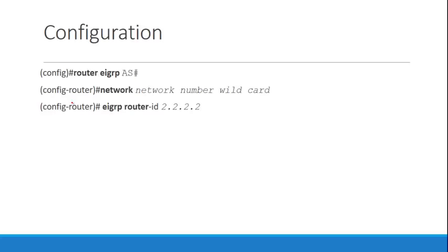We do the network statement to activate the interfaces that will participate in EIGRP. We can also assign a router ID — we don't have to, as EIGRP will find one automatically. If not configured explicitly, EIGRP first looks at your loopback interfaces and uses the highest IP address among them. If there are no loopbacks, it uses the highest IP address of your active interfaces.